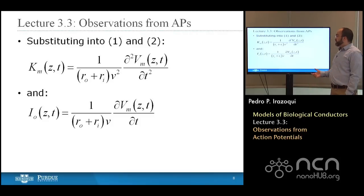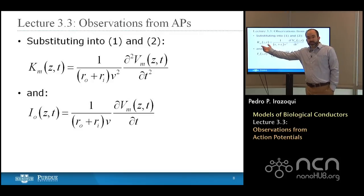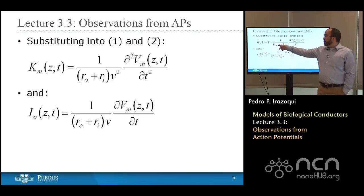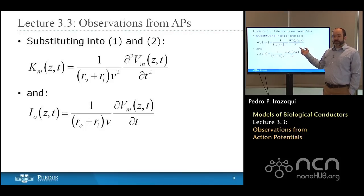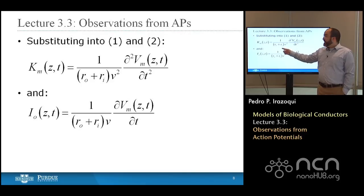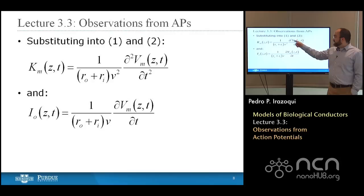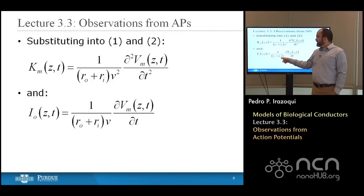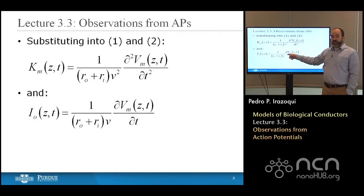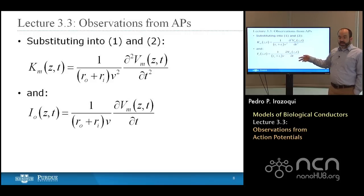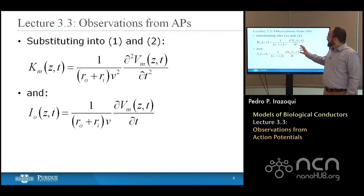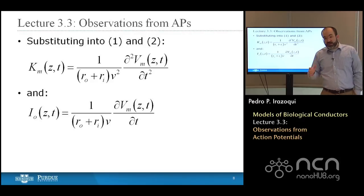Substituting equation one into equation two, the membrane current — previously described as one over (RO plus RI) times the second partial derivative of VM with respect to Z — can now be expressed at constant velocity as one over (RO plus RI) times V squared, times the second derivative of VM with respect to time. Similarly, the current outside the cell becomes one over (RO plus RI) times V, multiplied by the partial derivative of VM with respect to time. We've switched from derivatives with respect to Z to derivatives with respect to time.